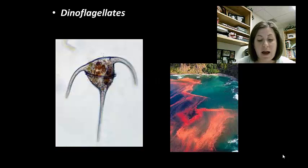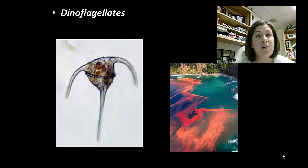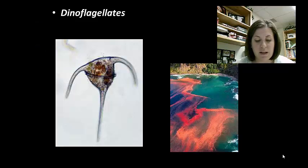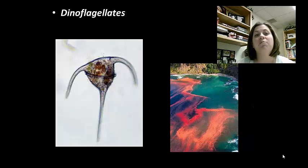Dinoflagellates contain a variety of pigments from yellow to green to brown. They are also an important food source in the aquatic food chain. Some live as symbiotes with coral, helping coral reefs. They are motile — not common in algae — and have two flagella that whip back and forth, making them move like a spinning top. Dinoflagellates can cause what we call red tides, which can cause poisoning of shellfish and fish kills because they produce a potent neurotoxin when present in large numbers.